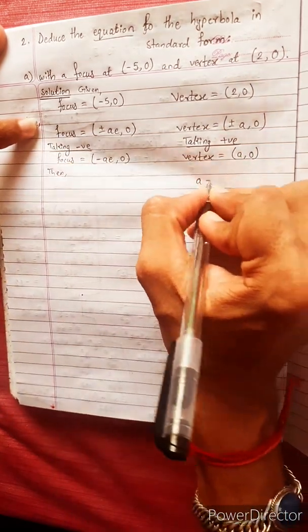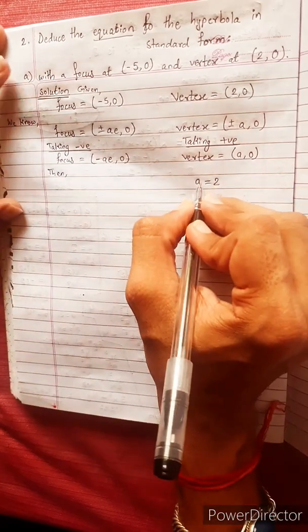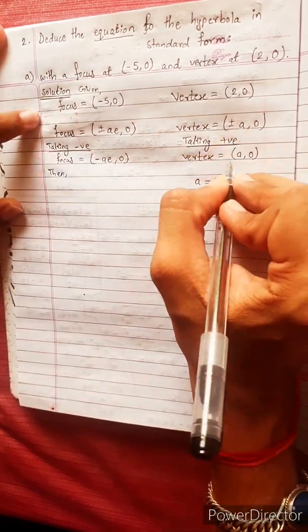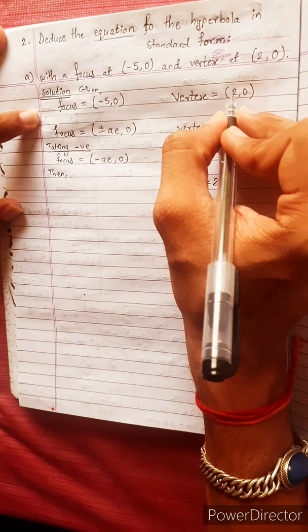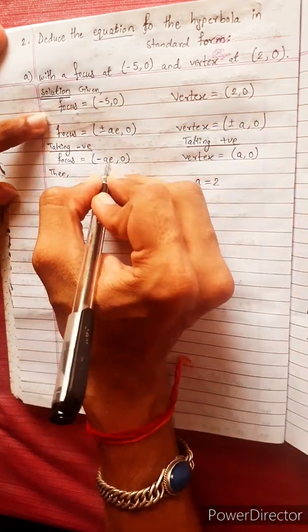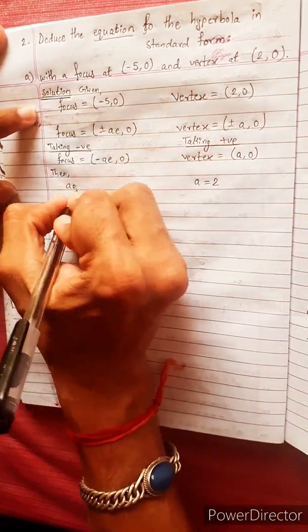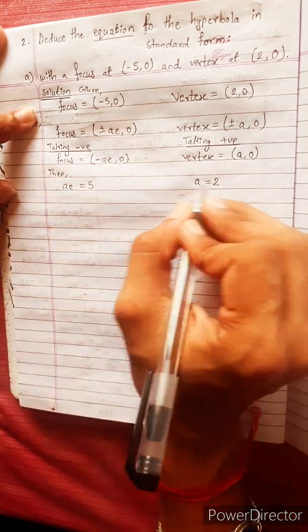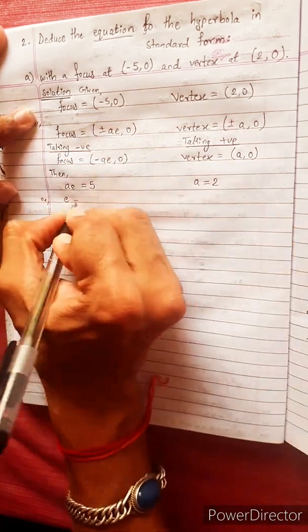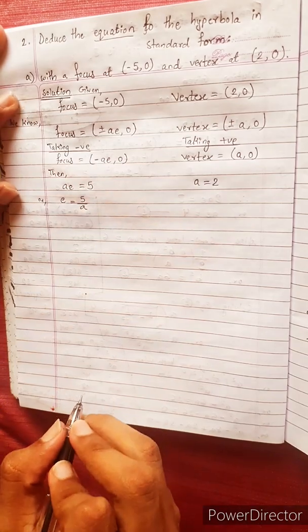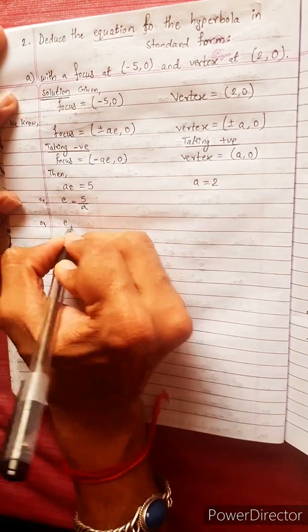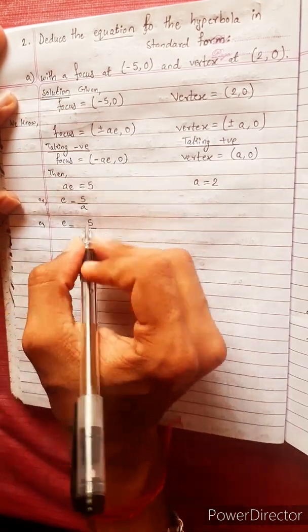Then a equals to 2. How a equals to 2? Or e equals to 5 divided by 2. a equals to 2.